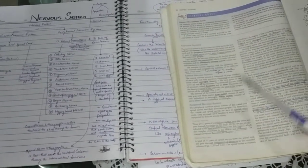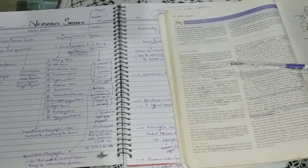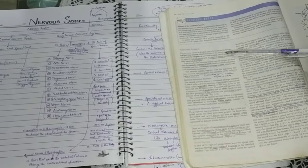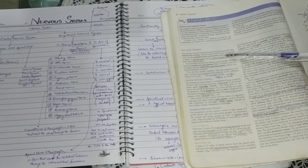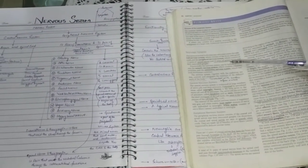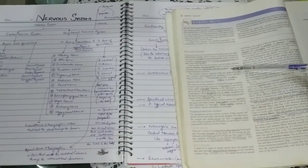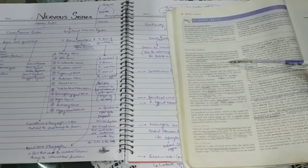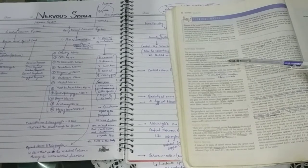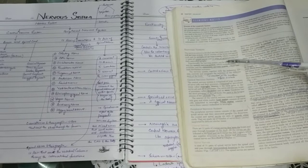Today's topic is related to the nervous system. This is a very important topic. The nervous system is divided into two main parts: the central nervous system, which consists of the brain and spinal cord, and the peripheral nervous system, which consists of 12 pairs of cranial nerves and 31 pairs of spinal nerves and their associated ganglia.